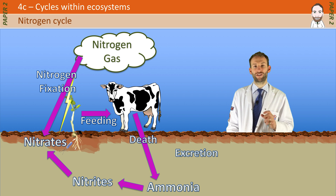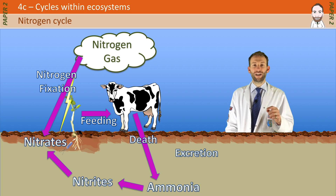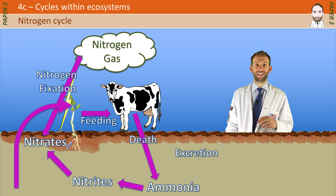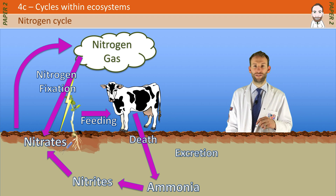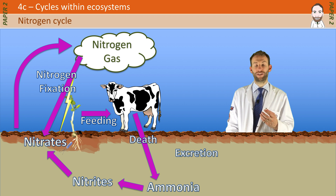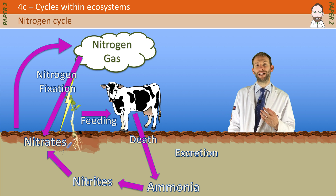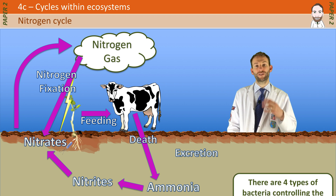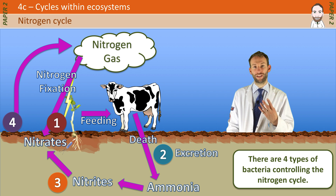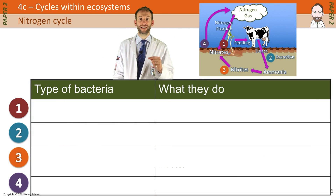Nitrates can also get returned back to nitrogen gas, and that is what we call denitrification. There is one other type of bacteria that does that — those are the denitrifying bacteria. So in total we've got four types of bacteria involved in the nitrogen cycle: the nitrogen-fixing bacteria that convert the gas into nitrates.